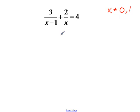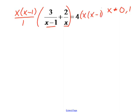What I'm going to do is look for my common denominator. Since x minus 1 and x don't have any factors in common, my common denominator is x times x minus 1. And I'm going to multiply on both sides, just like we did in the last section, by that common denominator. So times x times x minus 1.